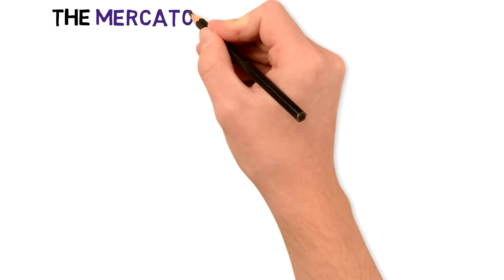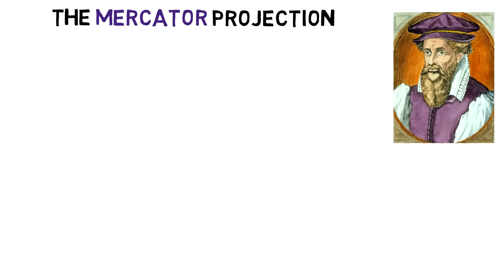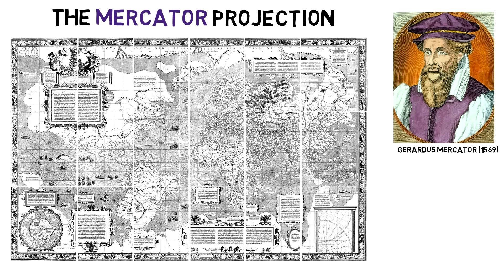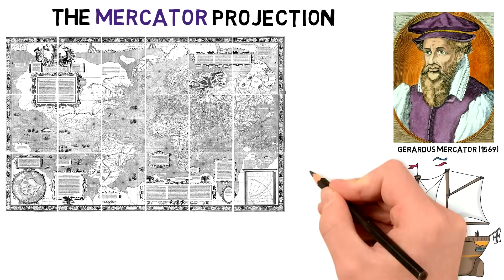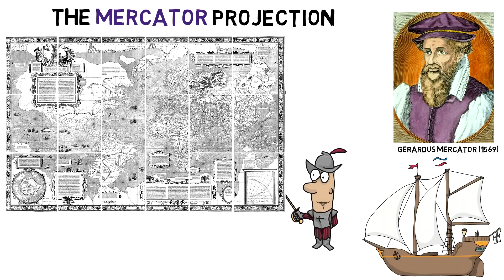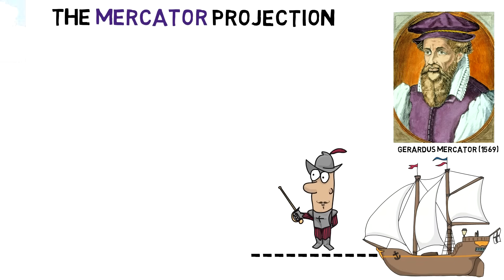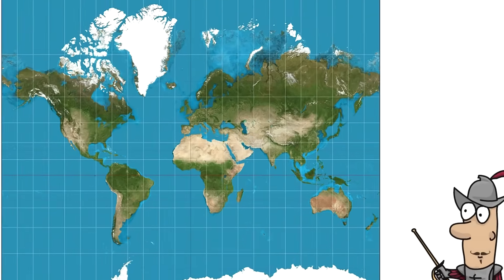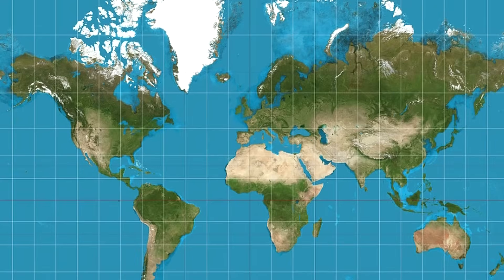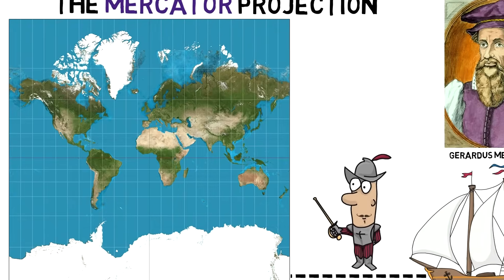The most well-known map projection used in the majority of maps across the world is the Mercator projection, presented by Flemish geographer and cartographer Gerardus Mercator in 1569. It's pretty old, and its widespread use has to do with the date it was invented — these were the times of European colonialism and maritime discoveries. This map focused on representing any constant course of constant bearing of a ship as a straight segment on the map, so it became the standard map for navigation.